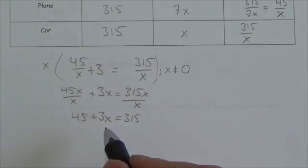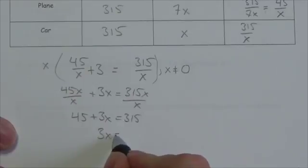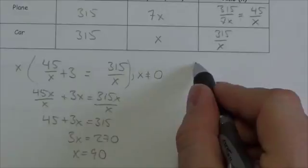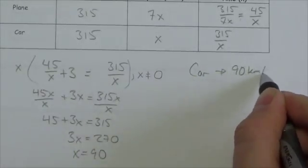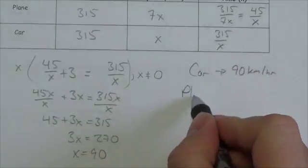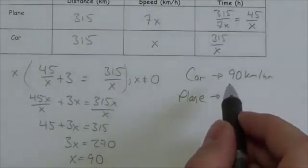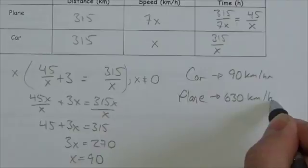Subtracting 45 from both sides gives 3x equals 270, and dividing gives x equals 90. So the car travels 90 kilometers per hour. The plane travels seven times faster, so the plane is going 630 kilometers per hour.